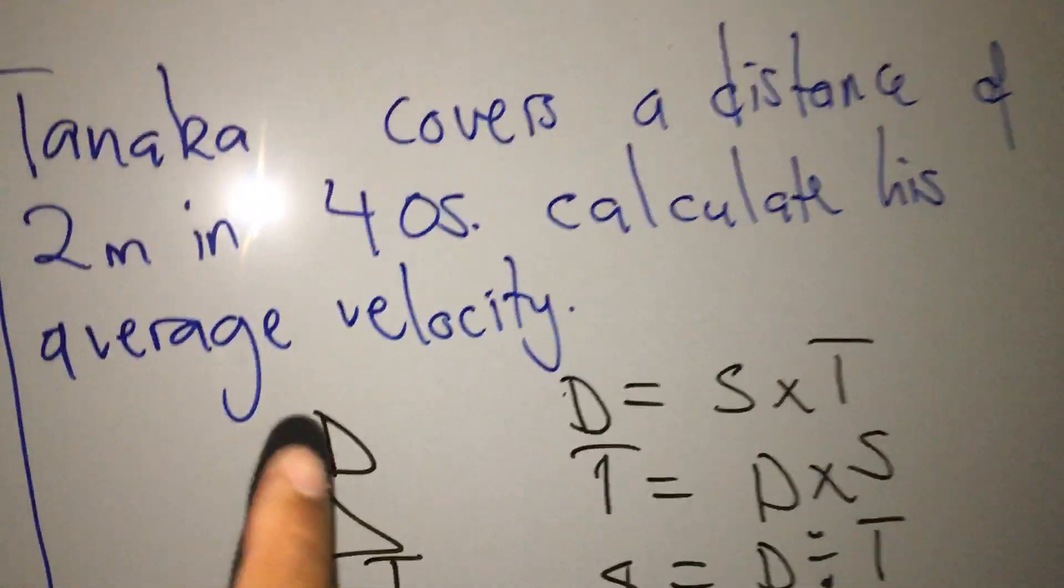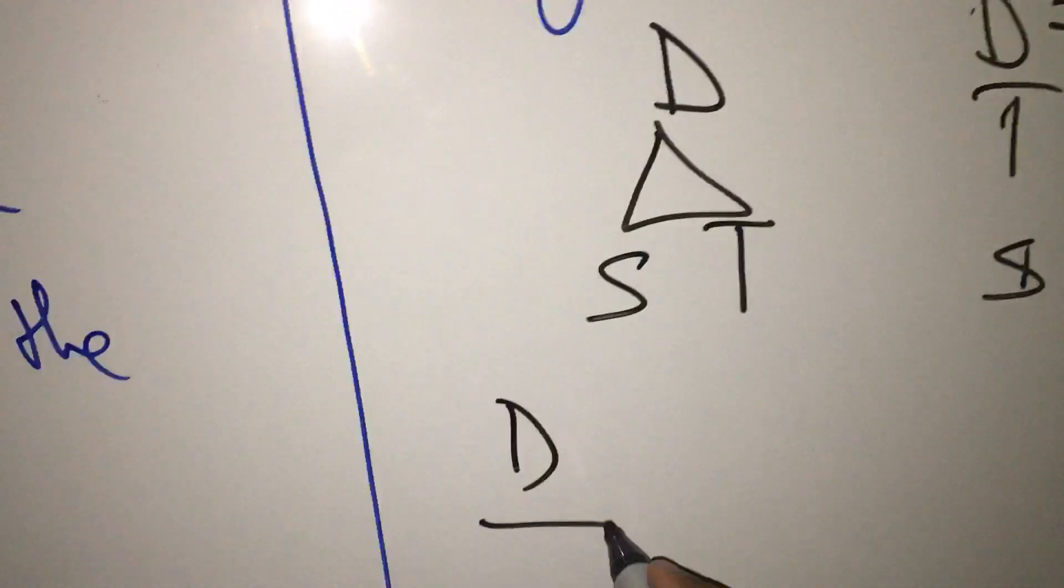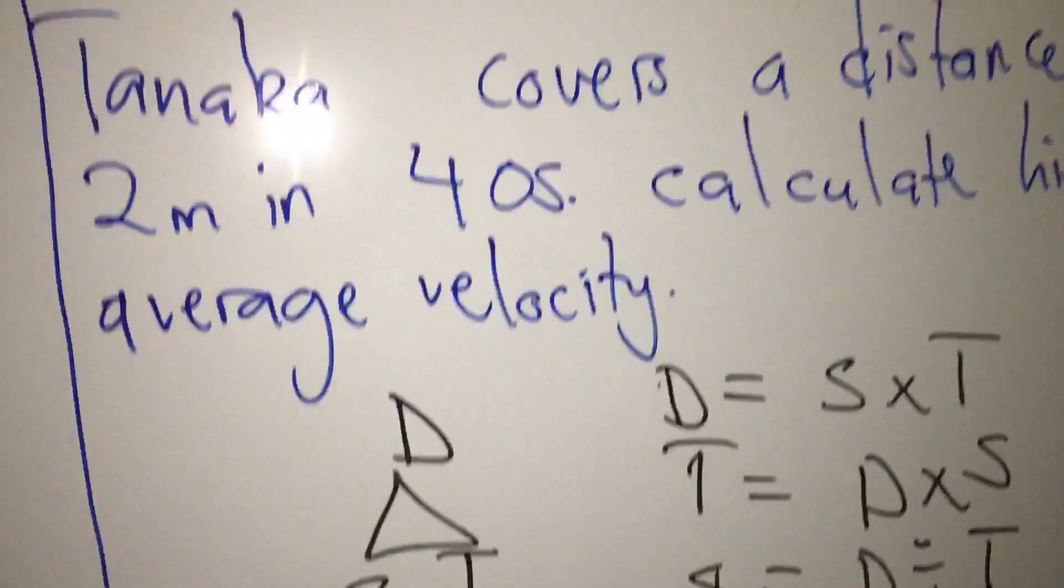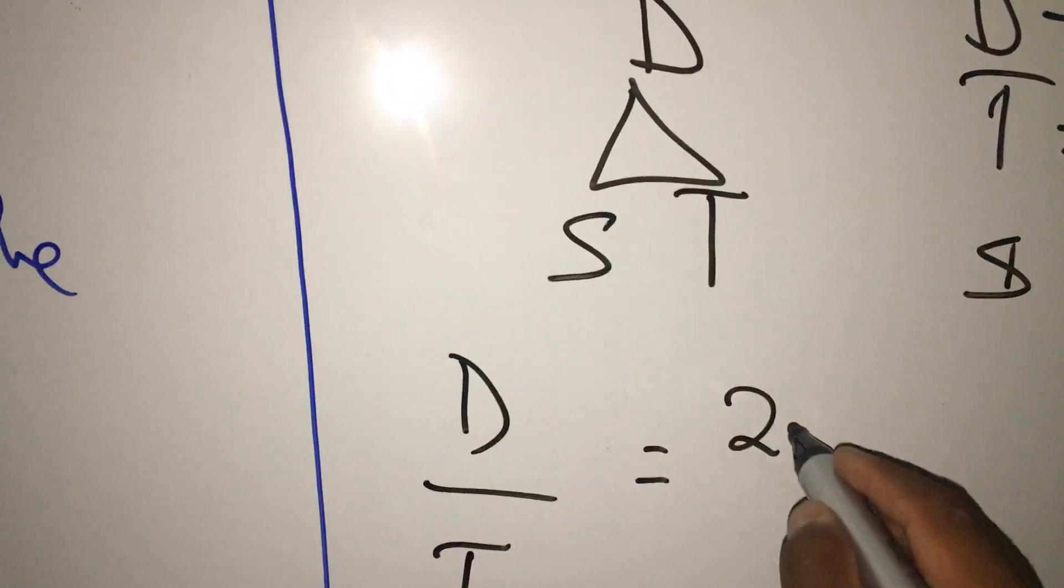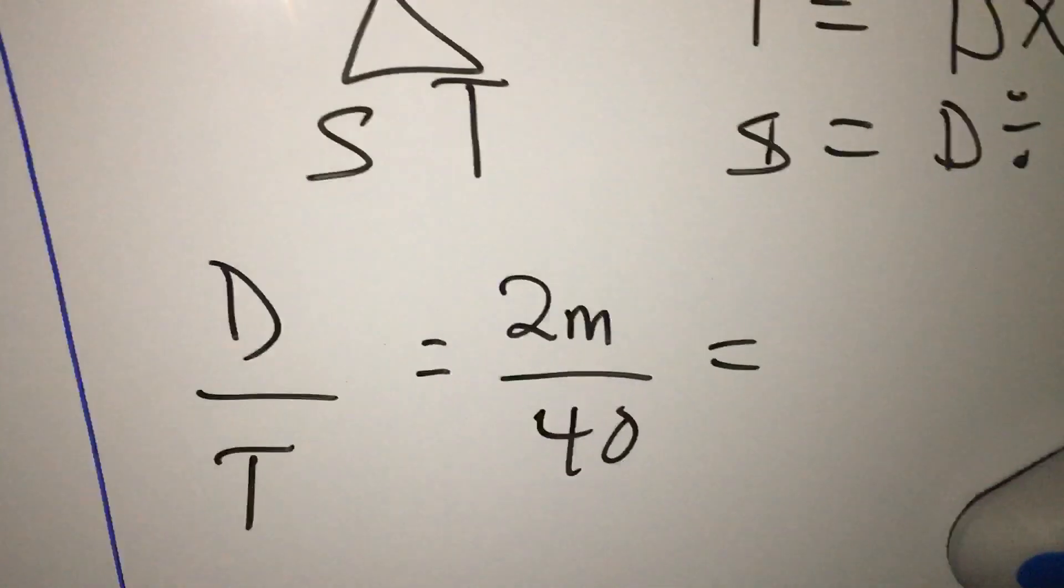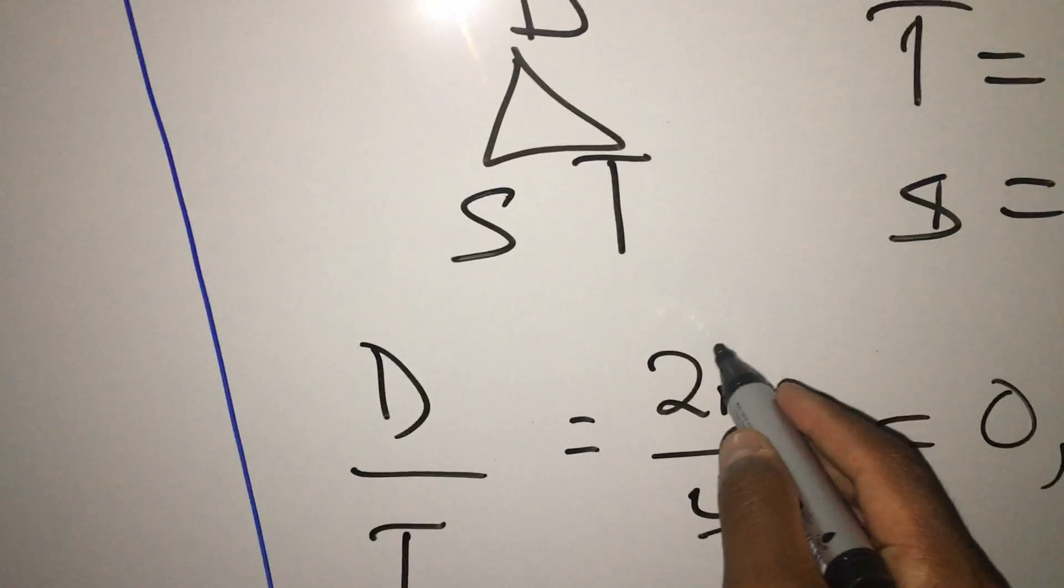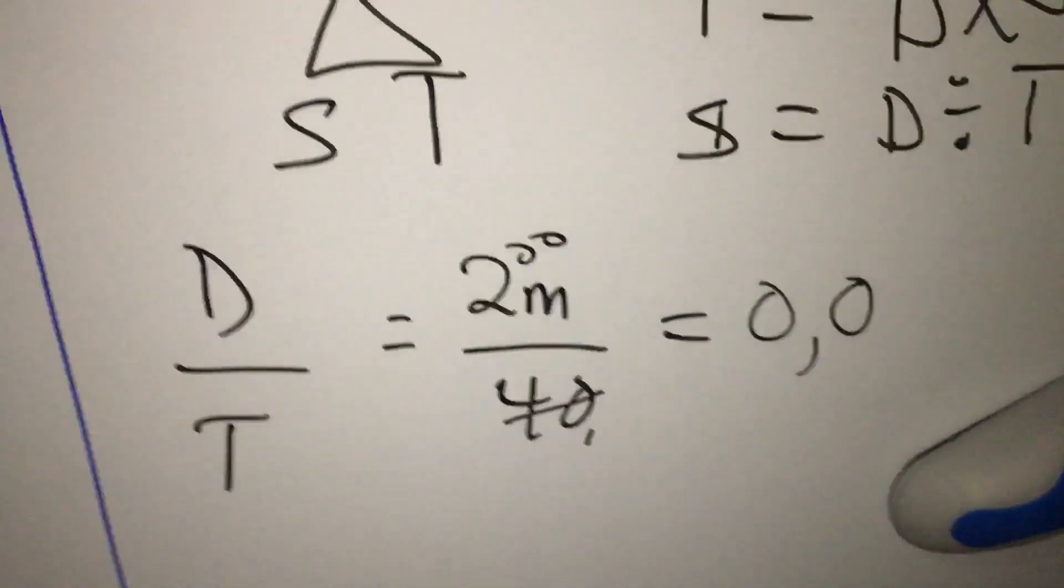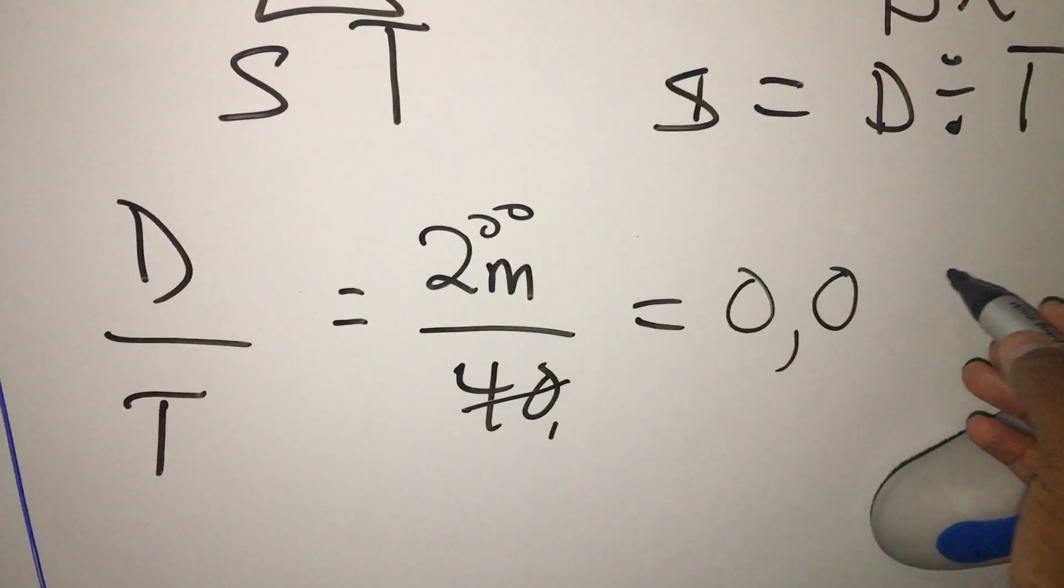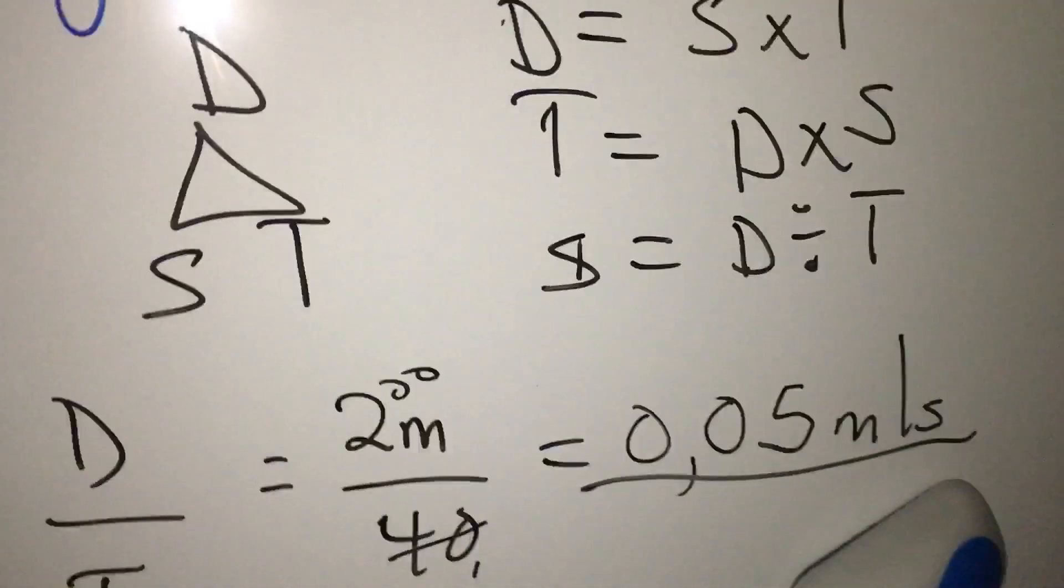I'm looking for average velocity, which is the average speed, so I'm going to say distance covered over time taken. What was my distance? The distance was two meters. My time was 40 seconds. So 2 divided by 40, you get 0.05. So your average velocity was 0.05 meters per second.